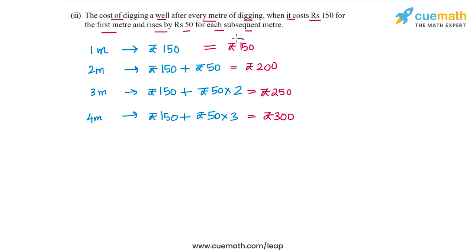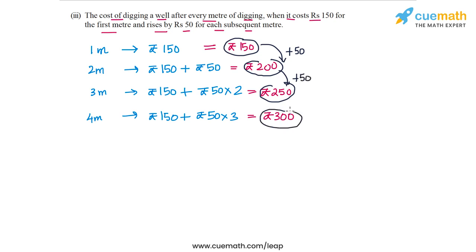Clearly this is an arithmetic progression. From 150 to 200 is a jump of 50, from 200 to 250 is a jump of 50 again, and from 250 to 300 is a jump of 50 again. The reason we get an arithmetic progression is because for each subsequent meter Rs. 50 additional are added. Every time the depth increases by 1 meter, Rs. 50 are added, so the difference is constant at 50. In this part we get an arithmetic progression.